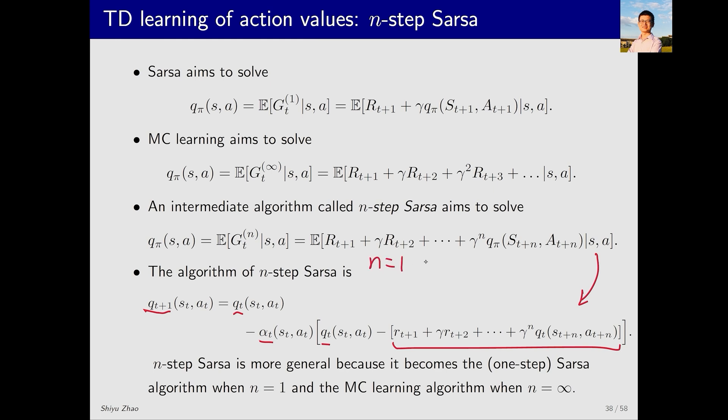If N equals 1, this equation becomes RT plus 1 plus the first power of gamma times QT ST plus 1 AT plus 1. This TD target is the same as the one used in SARSA. If N equals infinity, this equation can be transformed into a Monte Carlo algorithm. Let's see why. If we set alpha T to always equal 1, then this term becomes 1, which can be omitted. The term QT cancels out with the term on the right side, leaving QT plus 1 equal to the sum of all subsequent samples. When N is infinity, the term at the end also vanishes, resulting in the total sum. From this, we understand that by simply changing N to 1 or infinity, the algorithm becomes either SARSA or Monte Carlo respectively.